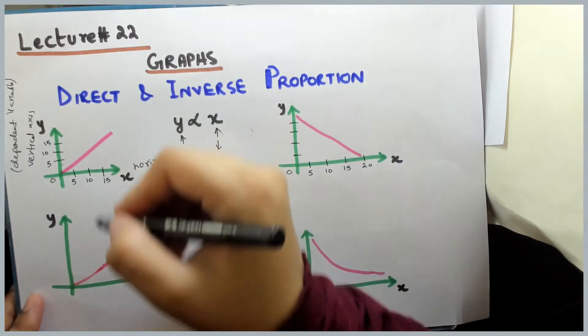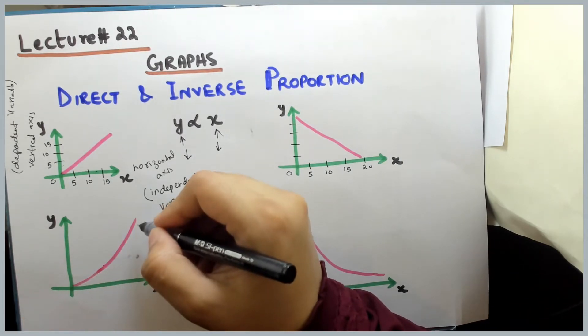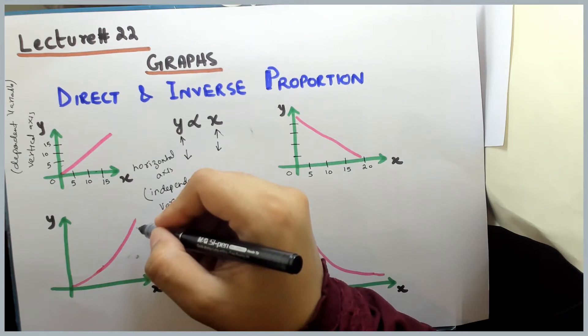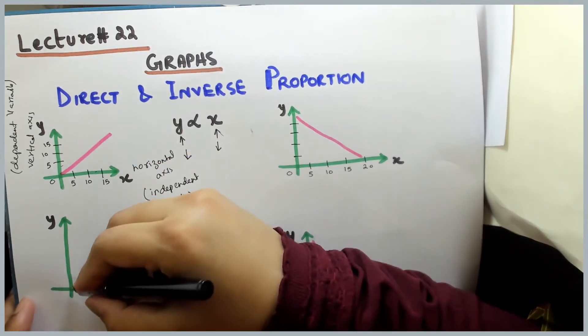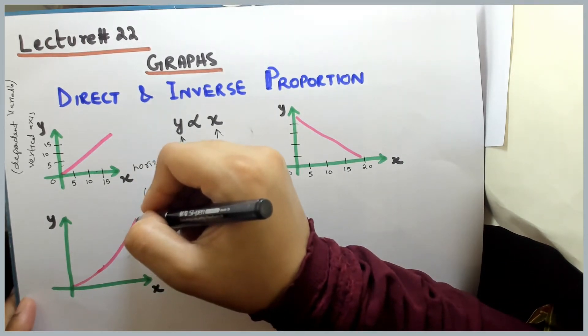Similarly, graph can be raised exponentially. We will talk about mathematical equations a little later. But just look at it here, exponentially the graph is going upward. That is also direct proportion example.